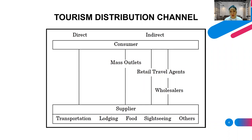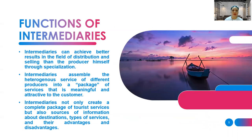When using an indirect distribution channel, the product from the suppliers passes through travel intermediaries such as wholesalers, retail travel agents, or mass outlets before it reaches the consumer. Intermediaries can achieve better results in distribution and selling than the producer himself through specialization, because they can rearrange the product they are selling to the tourist or consumer.